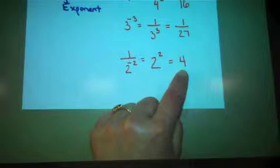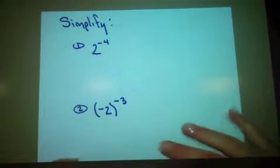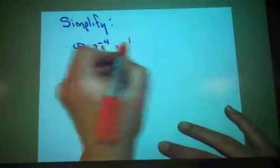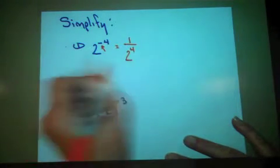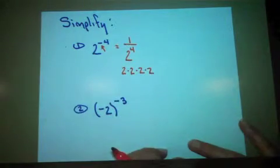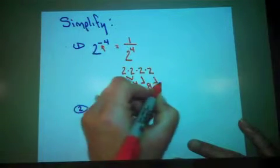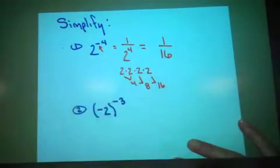So let's see how we can apply this to actual problems. Let's simplify 2 to the negative 4th power. The first thing we want to notice is the negative. This is going to become 1 over 2 to the 4th power. 2 to the 4th power means I need to multiply 2 by itself 4 times: 2 times 2 is 4, times 2 again is 8, times 2 again is 16, which means this simplifies to the fraction 1 over 16.